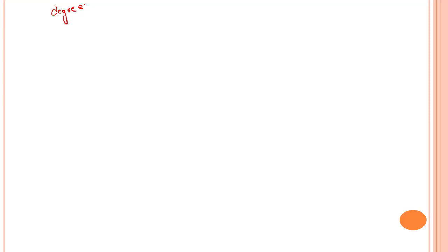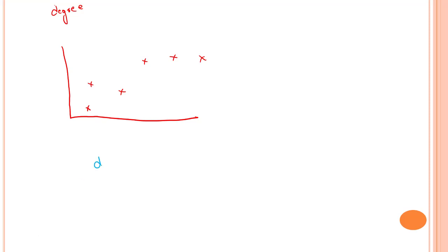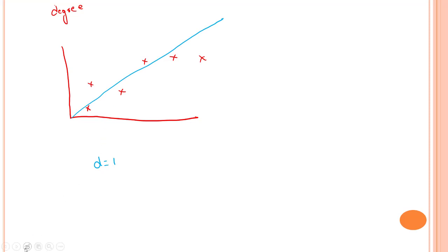Let's take an example. We have a problem where we need polynomial regression. The parameter here is degree — with the increment of degree, the complexity also increases. This is our training set with some data points. Starting with d equals to one, we have a straight line. For d equals to two, we might have something slightly more curved.